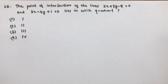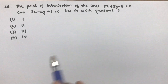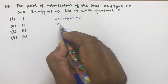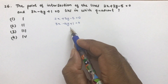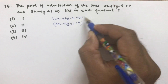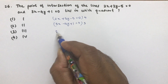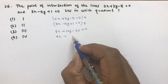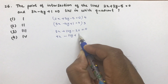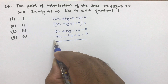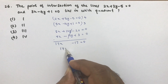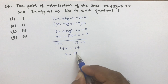Find which quadrant the intersection of 2x+3y−5=0 and 3x−4y+1=0 lies in. Solve by elimination: multiply the first equation by 4 to get 8x+12y−20=0, and the second by 3 to get 9x−12y+3=0. Adding these gives 17x−17=0, so x=1.